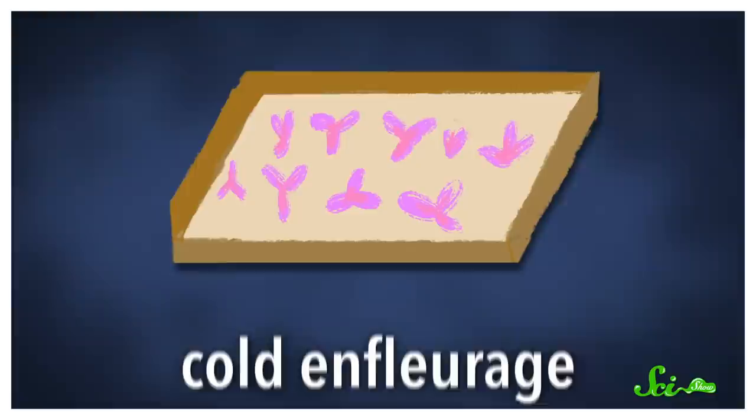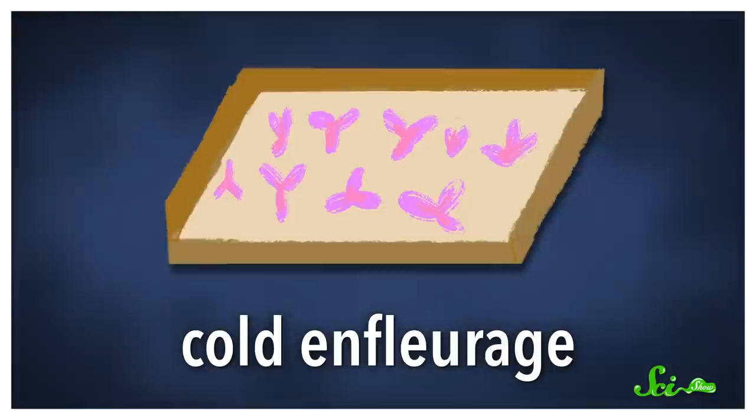Tiputi used a technique called cold enfleurage to extract scents, which is where a fat, like lard or tallow, is infused with a scent from fragrant plants over the course of a few days. Fragrant compounds are often soluble in oils, so they would diffuse from the plant into the fat and remain there after the plant material was removed.